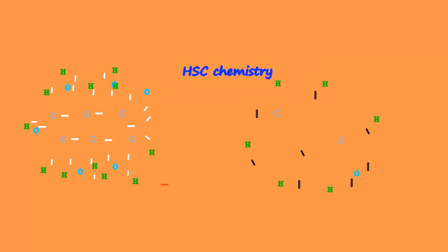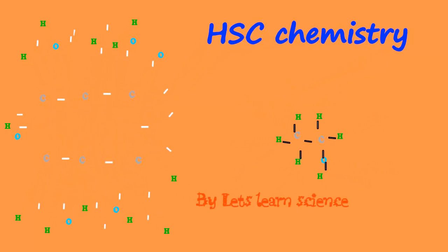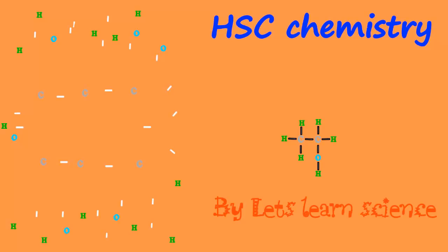There's yttrium, ytterbium, actinium, rubidium, boron, gadolinium, niobium, iridium, and strontium, and silicon, and silver, and samarium, and bismuth and bromine and lithium, beryllium, and barium.